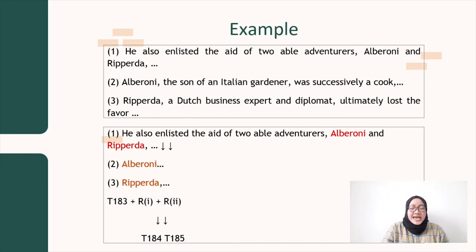For the clause one, he also enlists the aid of two able adventurers, Alberoni and Ripperda. The second clause or clause number two, Alberoni, the son of an Italian gardener was successively a cook. And number three, Ripperda, a Dutch business expert and diplomat, ultimately lost the favor. So as you can see in the first clause, there are theme and rheme. Theme here is he also enlists the aid of two able adventurers, and rheme here is Alberoni and Ripperda, and the explanation, but here is cut.